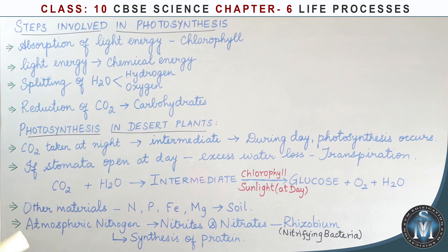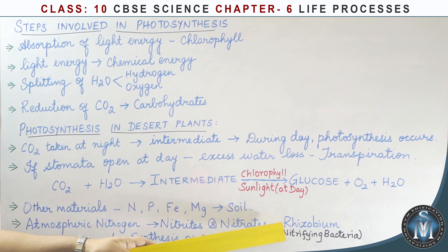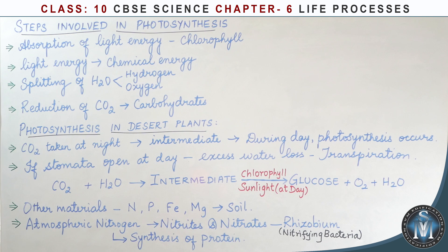Plants also require other materials like nitrogen, phosphorus, iron, and magnesium from the soil. Nitrogen from the atmosphere can be converted into usable form by nitrifying bacteria such as Rhizobium. This atmospheric nitrogen is converted and is very important to the plants.